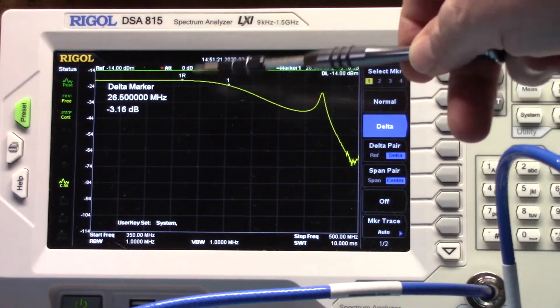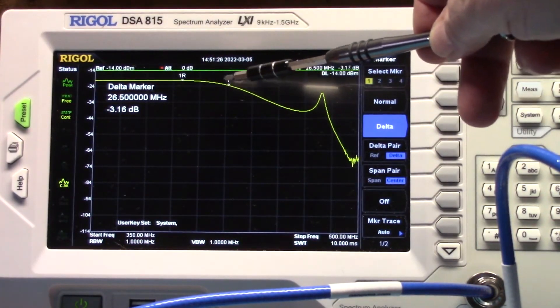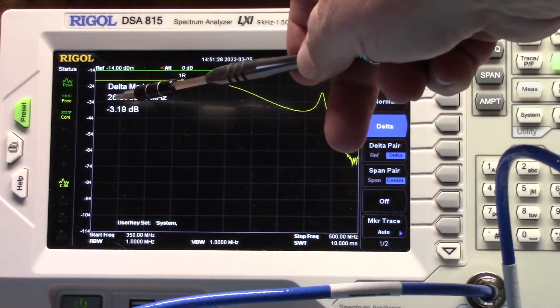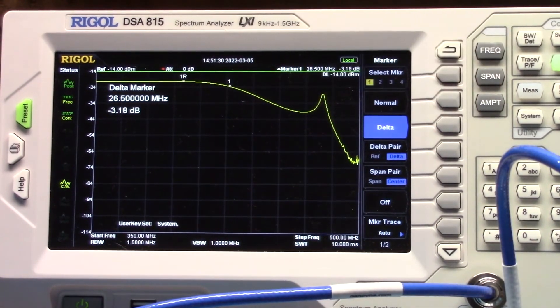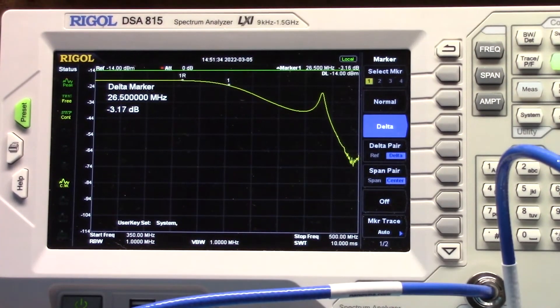What we have here is a marker here at 400 megahertz, and this second marker right here is at 400 plus 26.5, 426.5 megahertz. That is a delta off of our first marker.